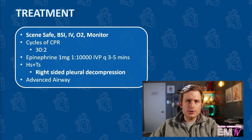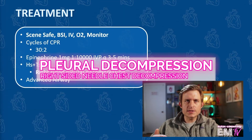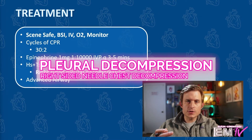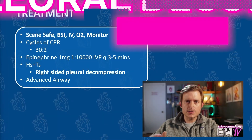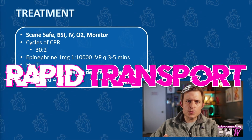Because of the tracheal deviation and the chest trauma reported in this scenario, I'm going to perform a right-sided thoracic decompression — I'm going to needle decompress the patient's right chest. I'll then consider an advanced airway and rapid transport.